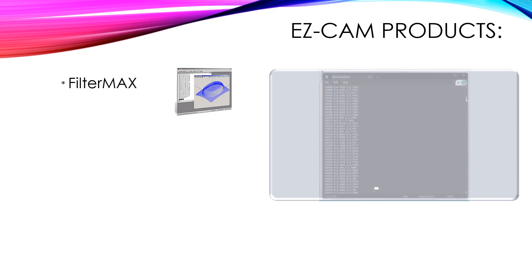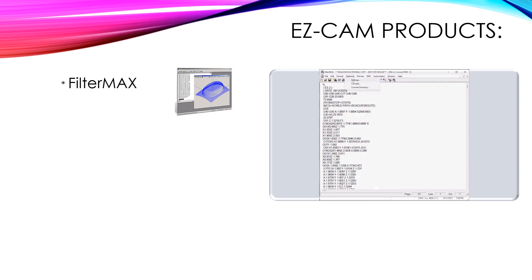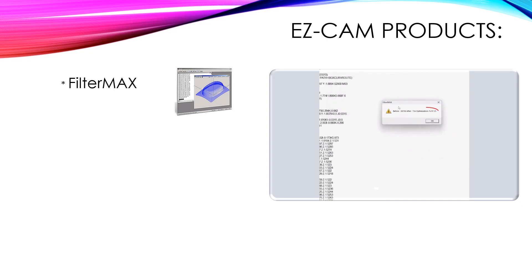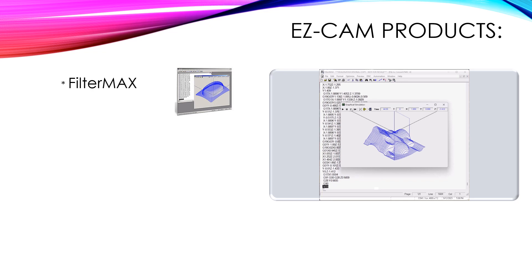FilterMax optimizes toolpaths for milling and turning. We take all those short line segments and convert them into arcs in the G-17, G-18, and G-19 planes. Shorten and optimize your G-code file by up to 98%. Preview toolpaths through wireframe simulation, read existing G-code with backplotting, and convert your toolpath to DXF.